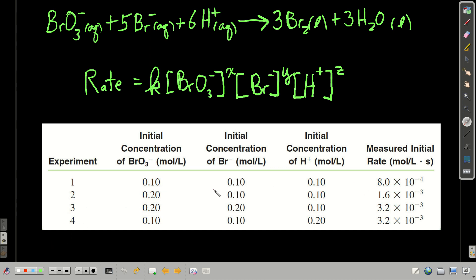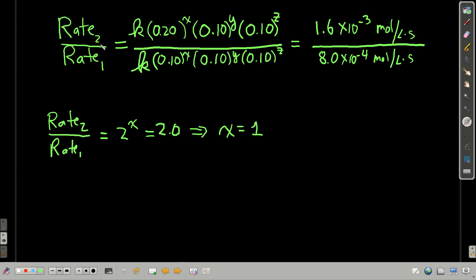So what we do is we plug in to the form of the rate law and take a ratio. So if we take the ratio of rate two over rate one, that gives us this. We plug in. I'm getting these numbers here from that table that I just showed you. Now, notice, this cancels, this cancels, this cancels.